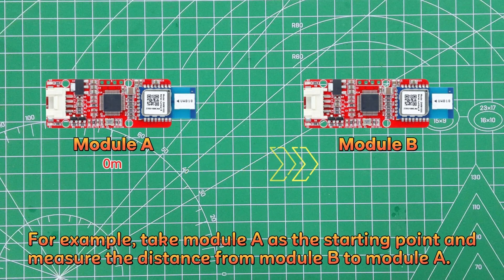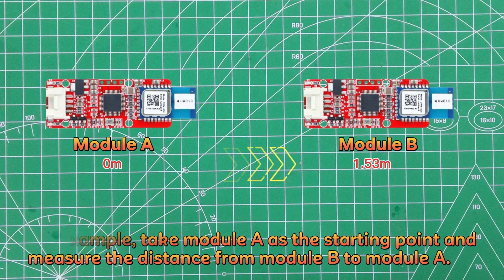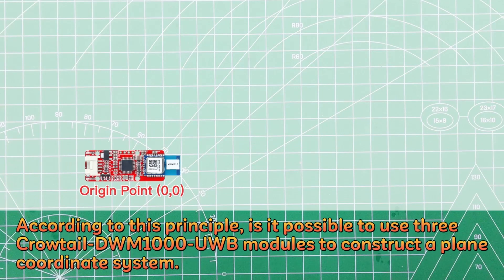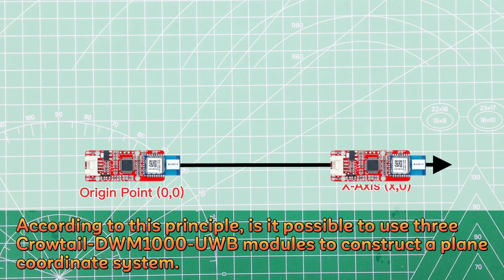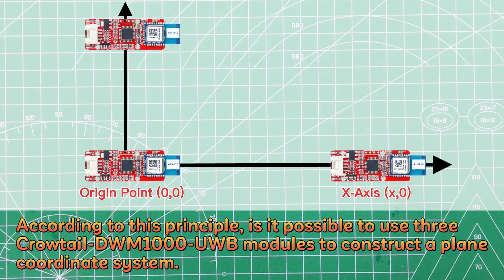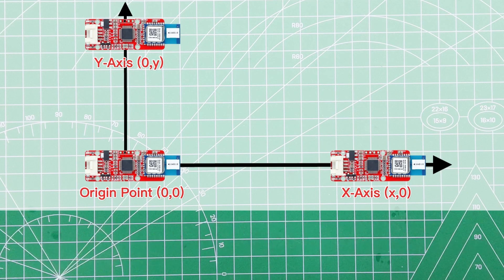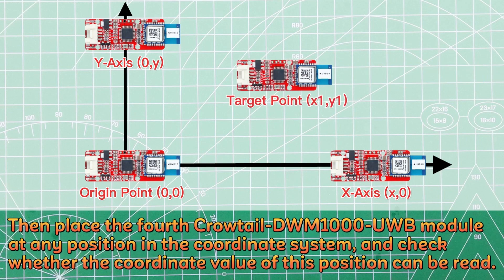For example, take Module A as the starting point and measure the distance from Module B to Module A. According to this principle, is it possible to use three Crowtail DWM-1000 UWB modules to construct a plain coordinate system? Then place the fourth Crowtail DWM-1000 UWB module at any position in the coordinate system and check whether the coordinate value of this position can be read.